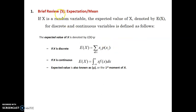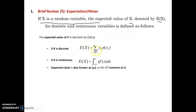The expectation: if X is a random variable, then the expected value E(X) for discrete and continuous random variables is defined as follows. For a discrete random variable, E(X) = summation of Xi × P(Xi) for all i. For a continuous random variable, E(X) = integral from minus infinity to infinity of x × f(x) dx.